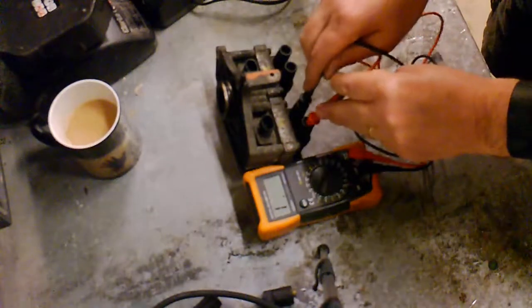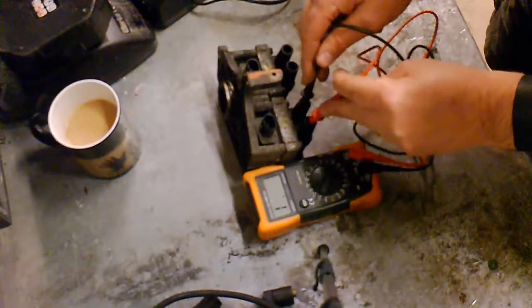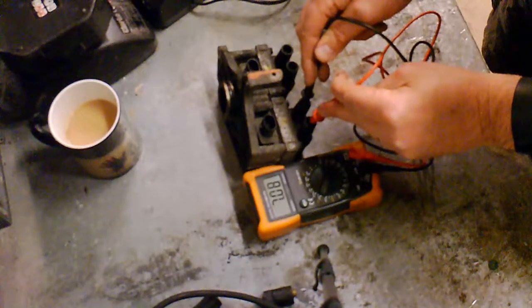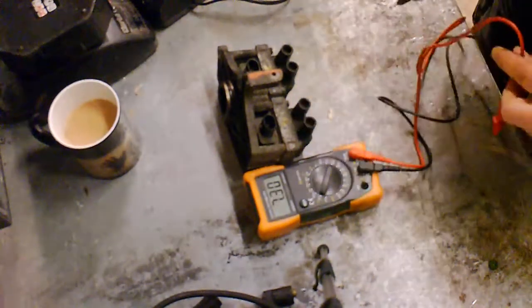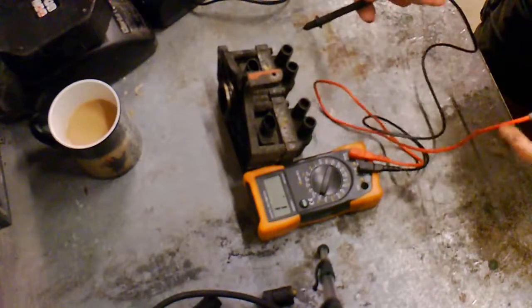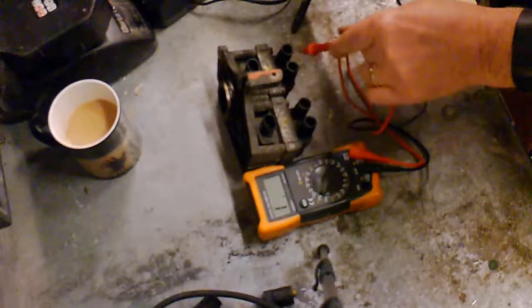So where the HT leads go in, check continuity there. See what I've got. I've got 7.8 ohms. 0.8 ohms. So is that right or wrong? I don't know because I don't have any technical information. But I do have another coil pack so I'm going to check one against the other again.